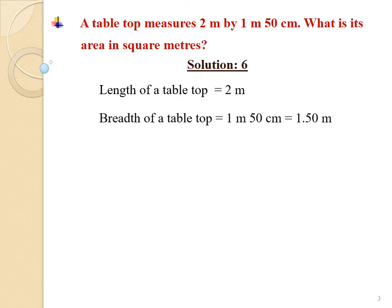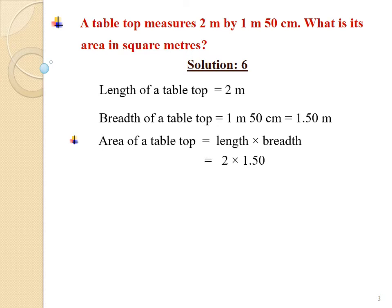Therefore, the area of the rectangular table top equals length multiplied by breadth, equals 2 multiplied by 1.5, equals 3.0 or 3 square meters. The area of the table top equals 3 square meters.